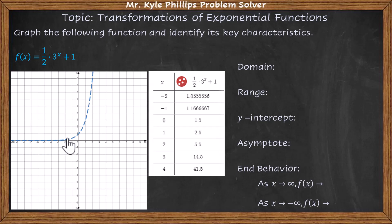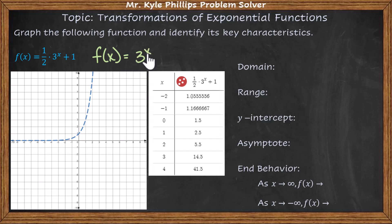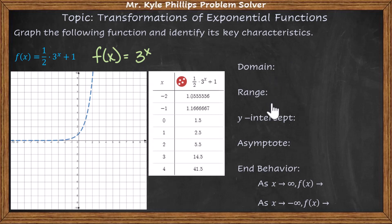This graph here that is dotted is the parent function of this graph. So if I'm looking at this, its parent function would just be 3 to the x. This is what's plotted, and then what we're going to do is graph this transformation of this parent function, talk about its differences, and then write out its key characteristics.